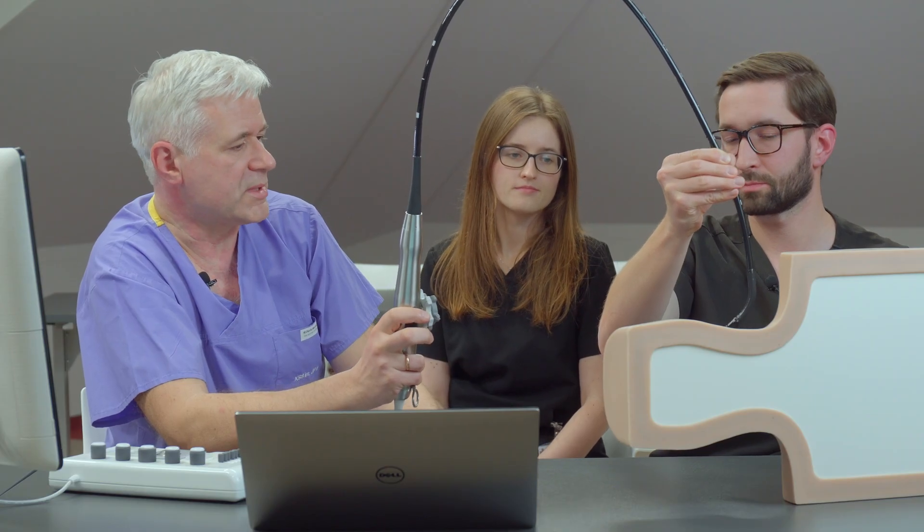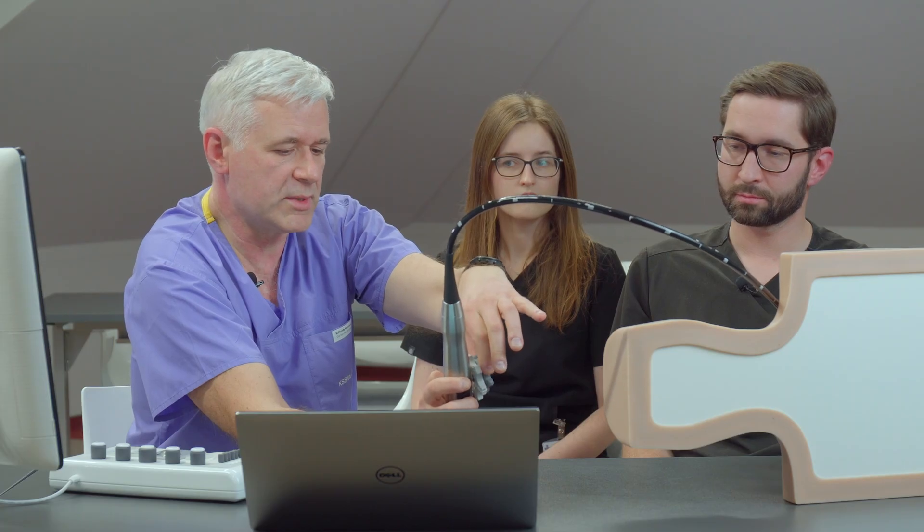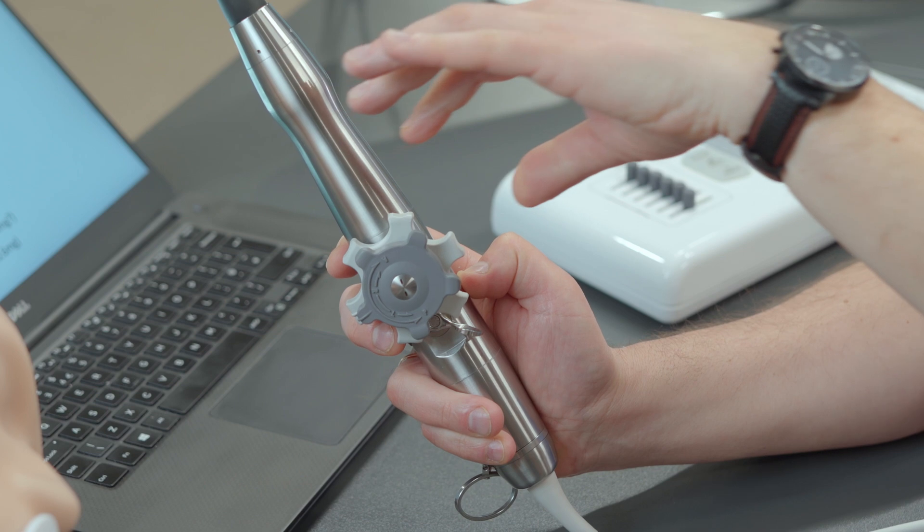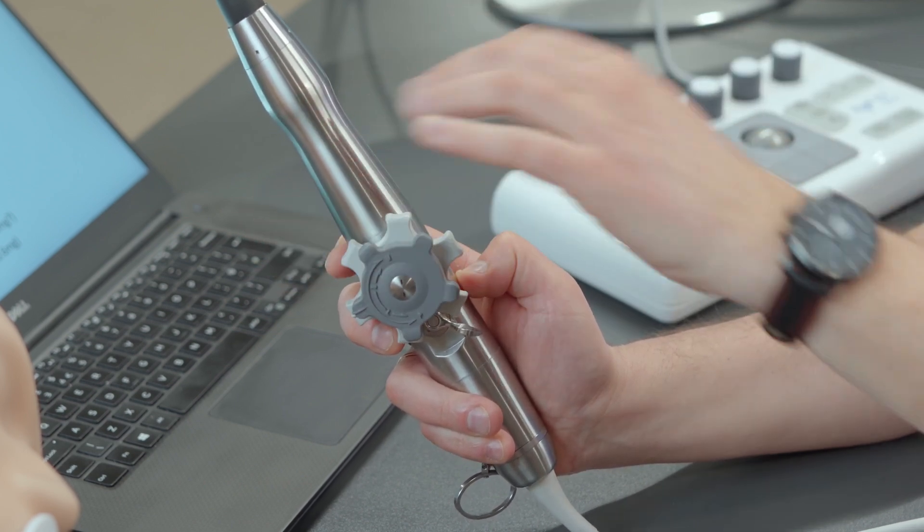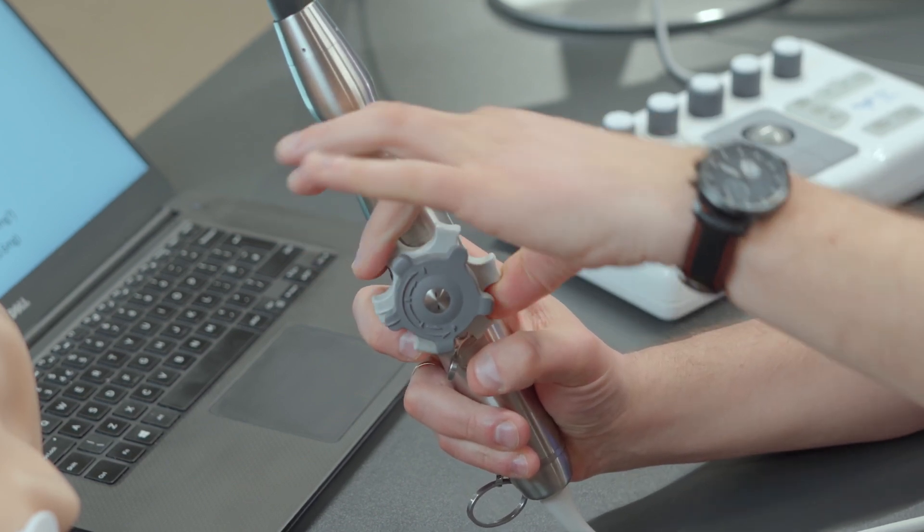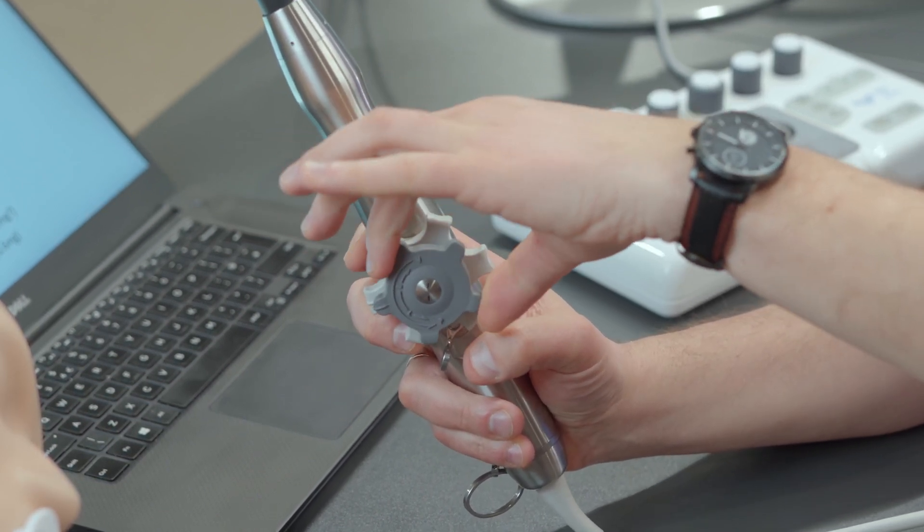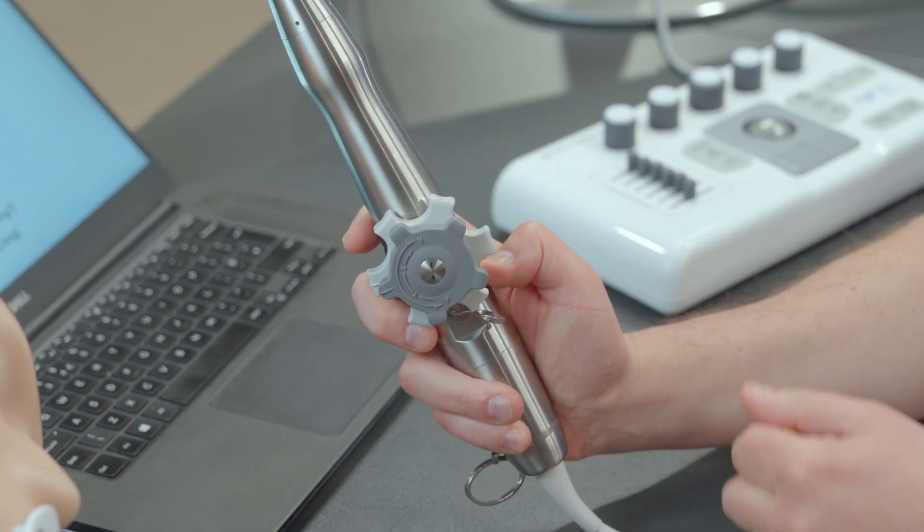You never do it when the tip is really flexed. If you move a little bit the knobs and you don't feel any resistance, you know that this is a proper moment to insert the probe. But if you have this kind of resistance here, it means that the probe is blocked and you have to release it before inserting.